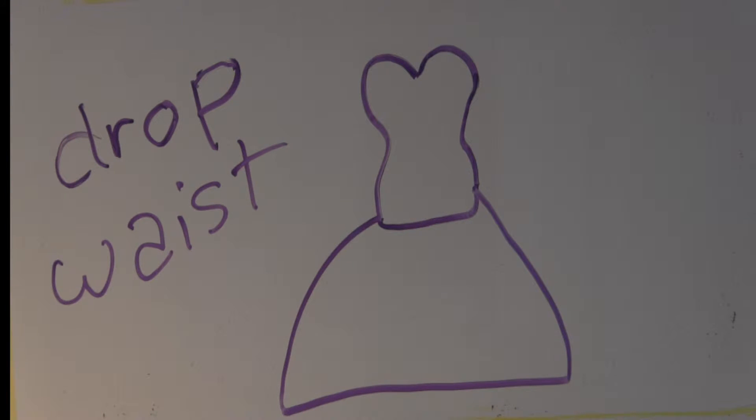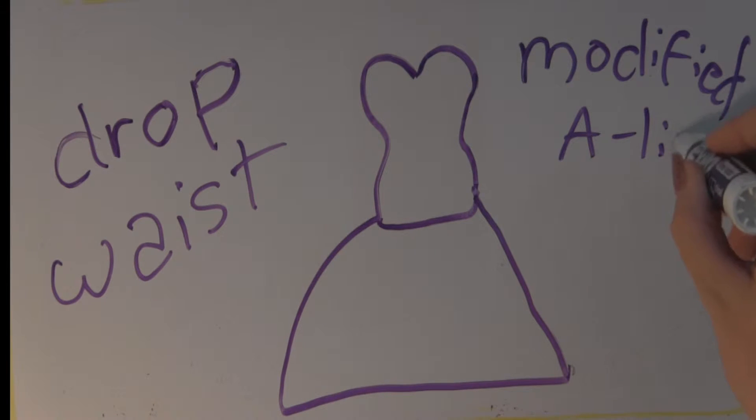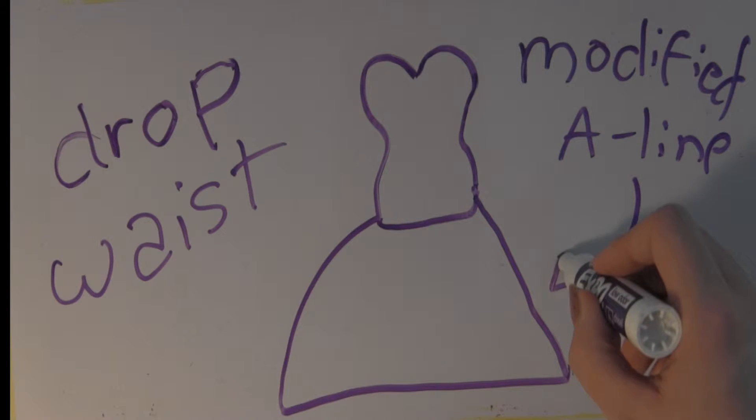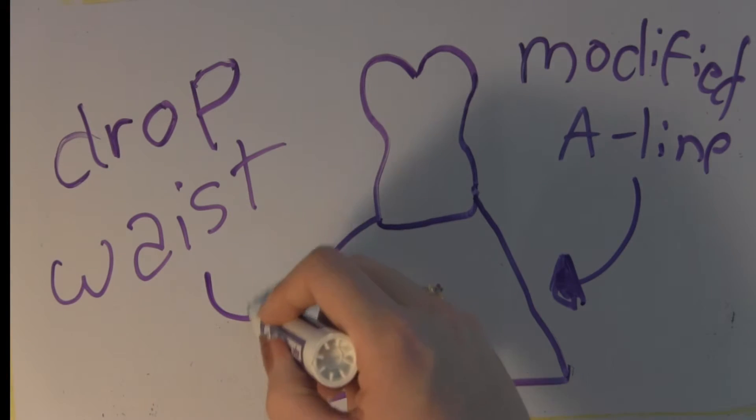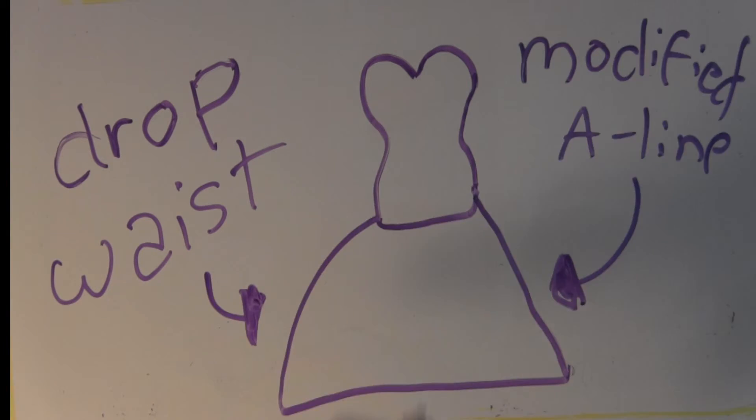A drop waist ball gown still has all the volume of a ball gown, just with more curve on top. A modified A-line is similar to this concept, as the bodice is slightly lower, but instead of having the drama of a full skirt, the A-line skirt just kind of elegantly flows away from the body instead.